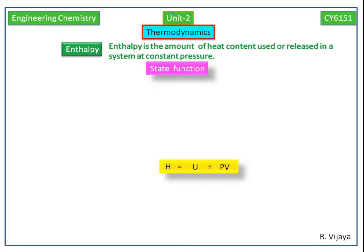Enthalpy is usually expressed as the change in enthalpy, i.e. delta H. Delta H is the process between the initial and the final state. That is, delta H is equal to delta U plus P delta V.